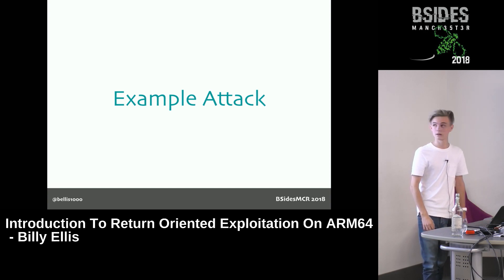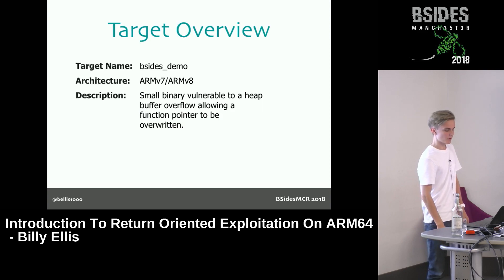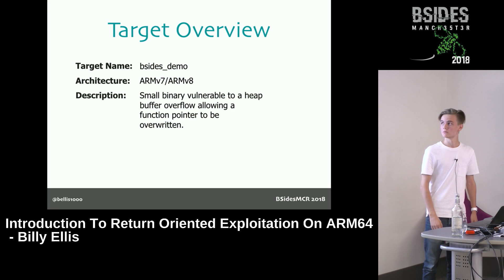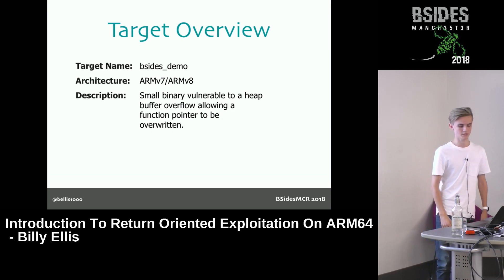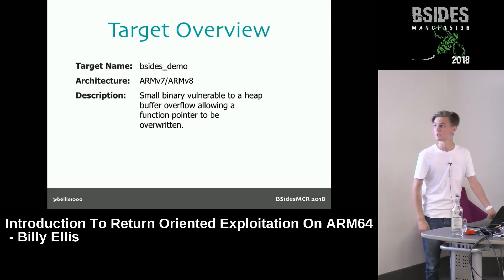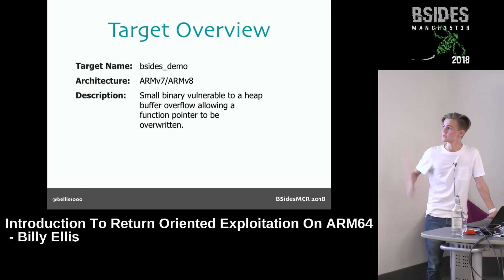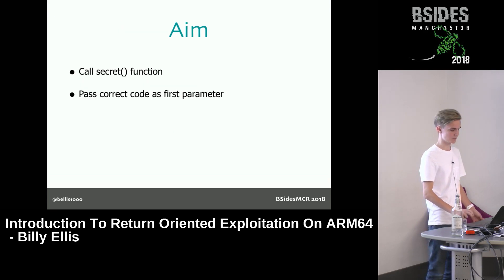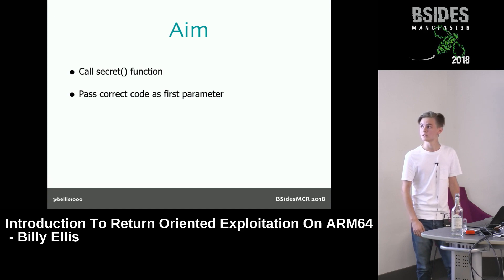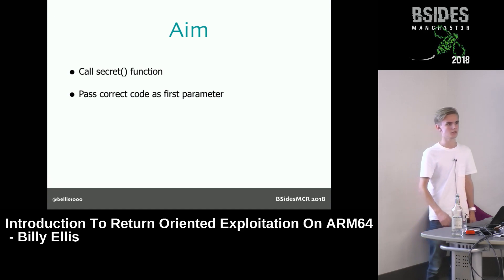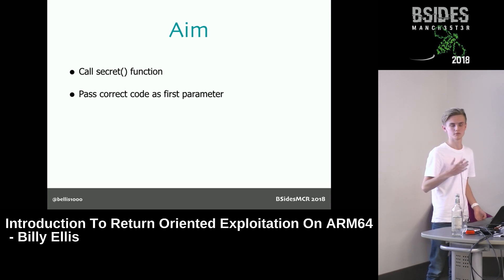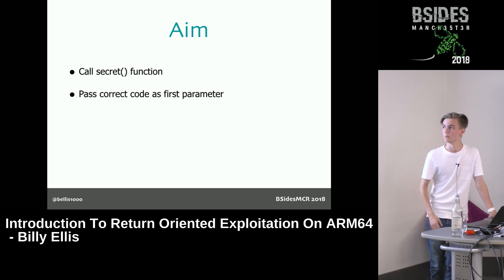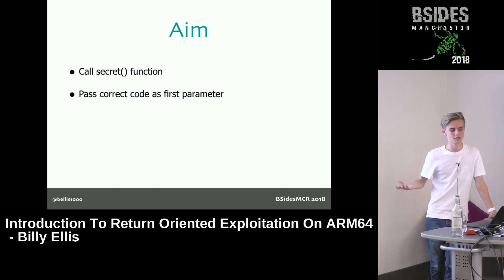Using those techniques, I'm going to show an example attack on a demo program I built for this talk. The target binary is called bsidesdemo — a small simple artificial binary. There's an ARMv7 and ARMv8 version, both of which I'll upload after this talk. The binary is described as vulnerable to a heap buffer overflow and allows a function pointer to be overwritten. The aim is to call the secret function — a function inside the binary that is never called in normal execution flow — and pass a code as the first parameter to get a success message.